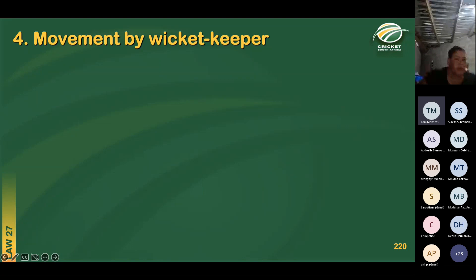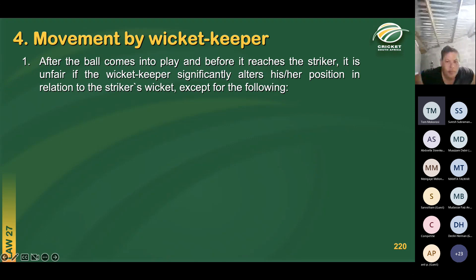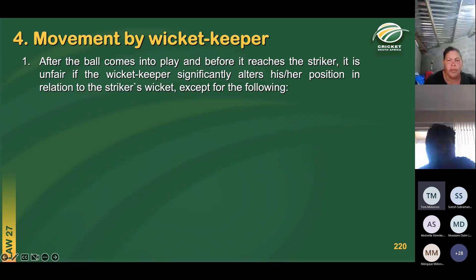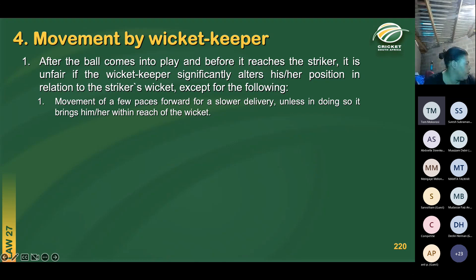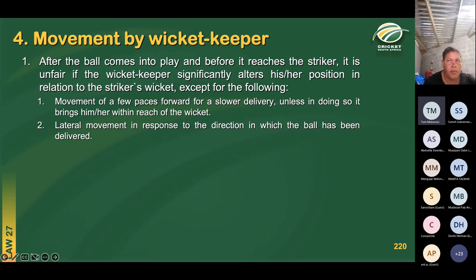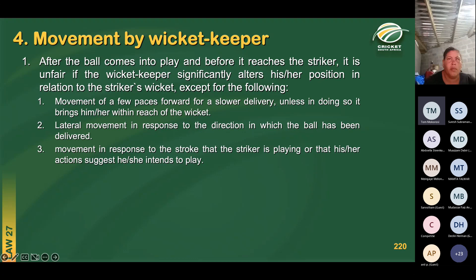Completing the law on restrictions to wicket keeper movement: after the ball comes into play and before it reaches the striker, it is unfair if the wicket keeper significantly alters his or her position in relation to the striker's wicket, except for movement of a few paces forward for a slower delivery — unless doing so brings the wicket keeper within reach of the wicket — lateral movement in response to the direction the ball is being delivered, and movement in response to the stroke the striker is playing or that his or her actions suggest.